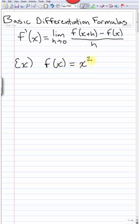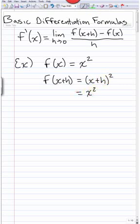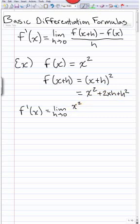Even something like f(x) = x² requires us to compute f(x+h). So this is (x+h)², and foiling, we get x² + 2xh + h². Therefore, our derivative would be equal to the limit of f(x+h) — so x² + 2xh + h² — minus f(x), so minus x², all over h.